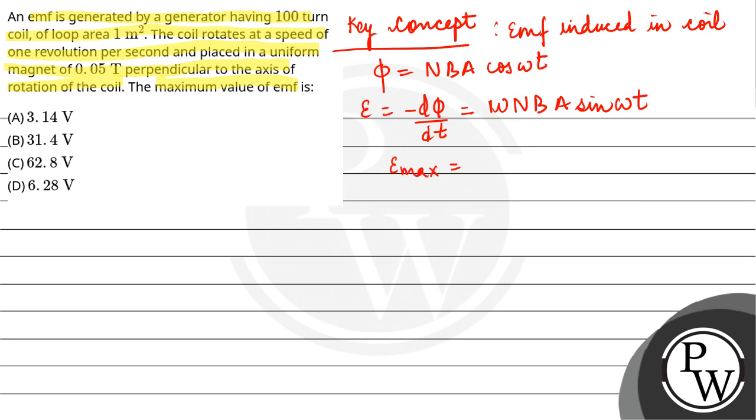According to the question, you have number of turns N equals 100, loop area A equals 1 meter square, and frequency given as 1 revolution per second. You have angular frequency ω equals 2πν, so it would be equal to 2π radians per second, and magnetic field B equals 0.05 Tesla.